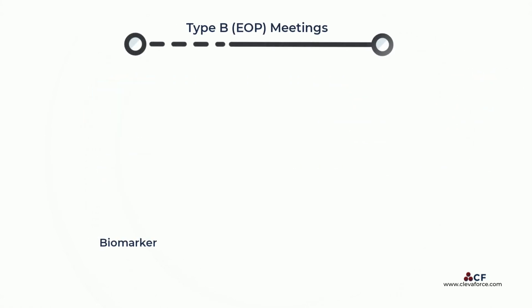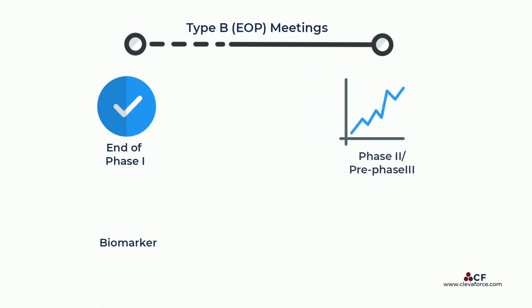Type B end of phase meetings, on the other hand, are end of phase 1 meetings for products that will be considered for marketing approval, as well as end of phase 2 or pre-phase 3 meetings.